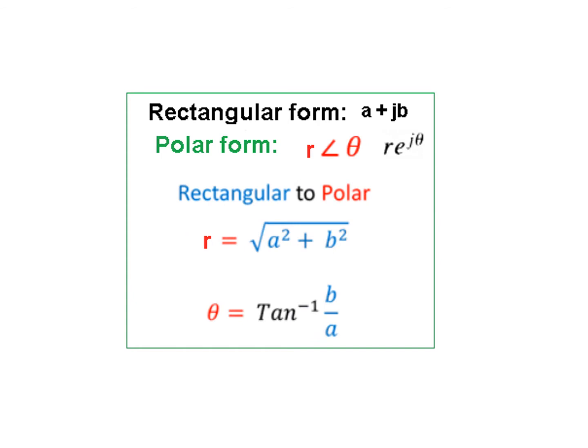The basic concept is that in rectangular form we write it as a plus jb, and in polar form we write it as a magnitude R and angle theta. It is also written as magnitude R and e raised to the power j theta. The formula for R is under root of a squared plus b squared.